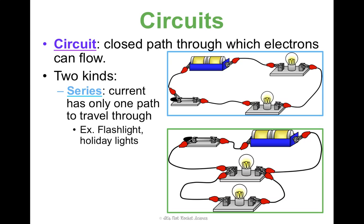This is how flashlights tend to be wired. Also, holiday lights — kind of like back in the day — if one of the bulbs went out and the whole string went out, you knew that was a series circuit. Nowadays they do a little bit better with that, but that's what a series circuit is: there's only one path to travel through.